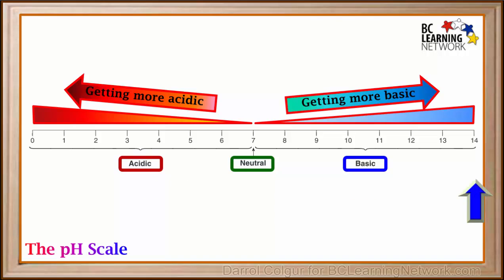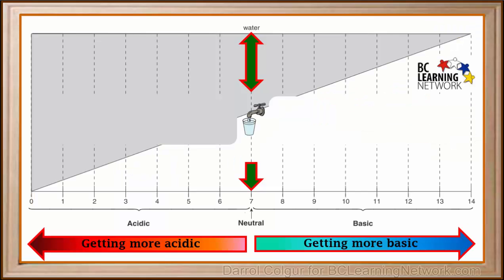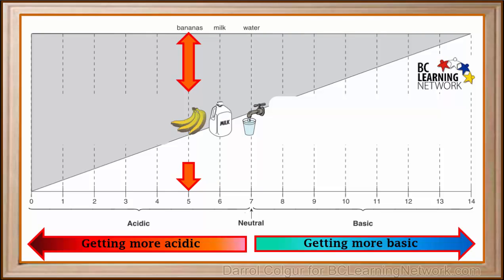Now we'll look at pH values for a few common substances. Remember, pure water is neutral and it has a pH of 7. Milk, which is very slightly acidic, has a pH of about 6. Bananas are a little bit more acidic with a pH of about 5.